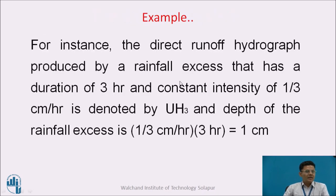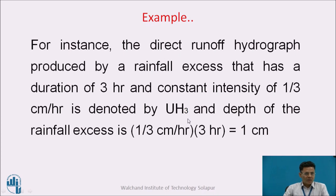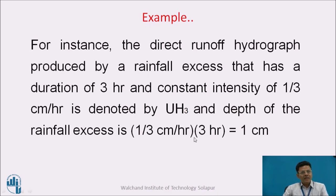For instance, the direct runoff hydrograph produced by rainfall excess of a duration of three hours and a constant intensity of one-third centimeter per hour is denoted by UH3 — the three-hour unit hydrograph. Here one can understand that one centimeter of rainfall excess has taken place in three hours. That is why it is called a three-hour unit hydrograph — unit meaning one centimeter of rainfall excess has taken place in three hours time.